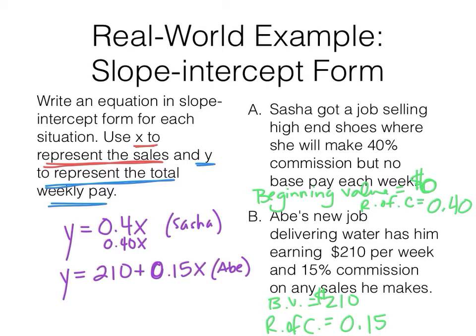A beginning value and a rate of change. That is what slope-intercept form is. That rate of change, that's the slope. That beginning value, that's the y-intercept.